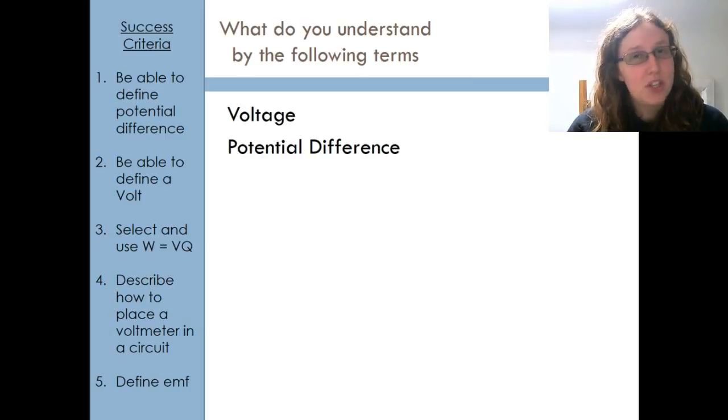At A-level you need to make sure you know the difference. The key thing to get in your head is that potential differences are types of voltages, like apples are types of fruit.